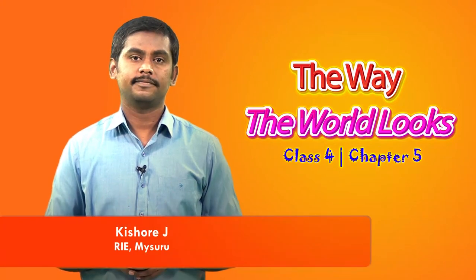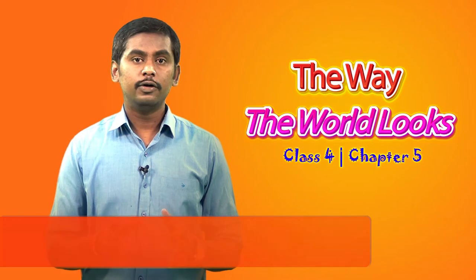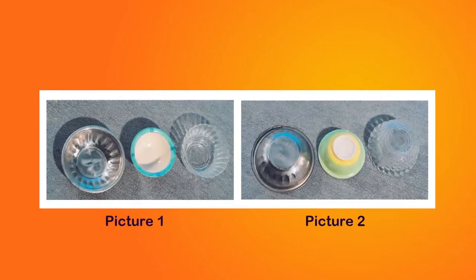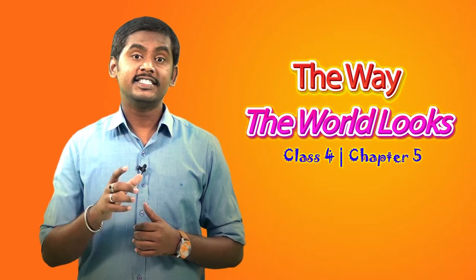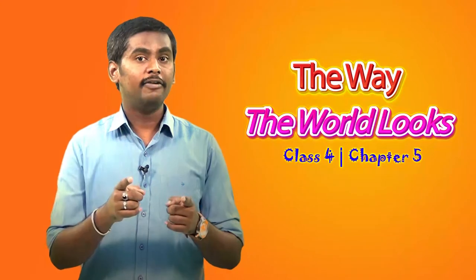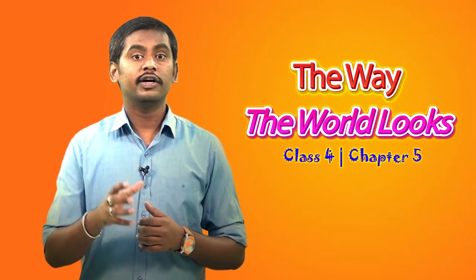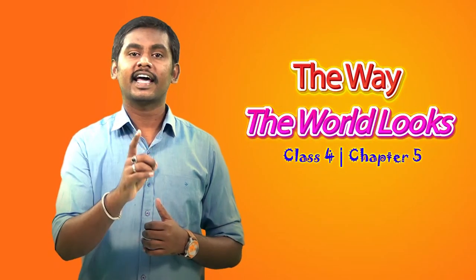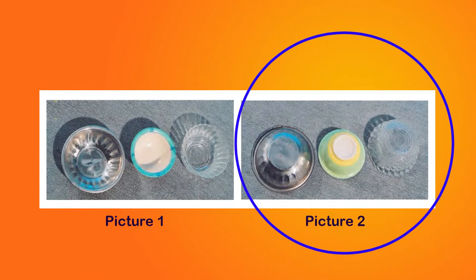Let's proceed to the next task. I will show you two images where you need to select the one where the bowls are upside down. These are the two given pictures. To answer this, let's try to have the side view of the picture. We can observe that in this side view, the bowls are not upside down. Now have a look at the given two options and identify the picture where the bowls are upside down. The second option is the correct answer where you can see that the bowls are upside down.